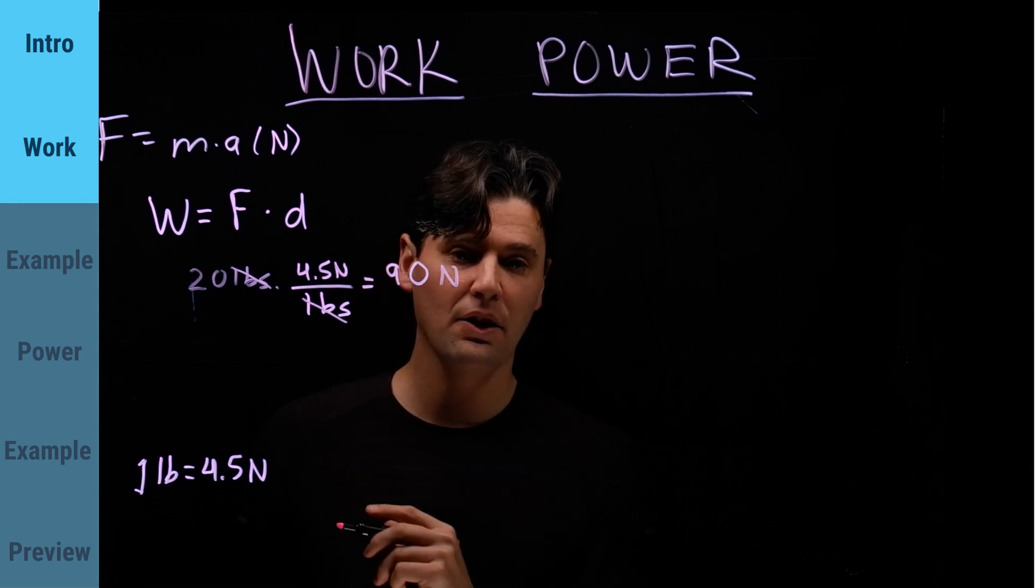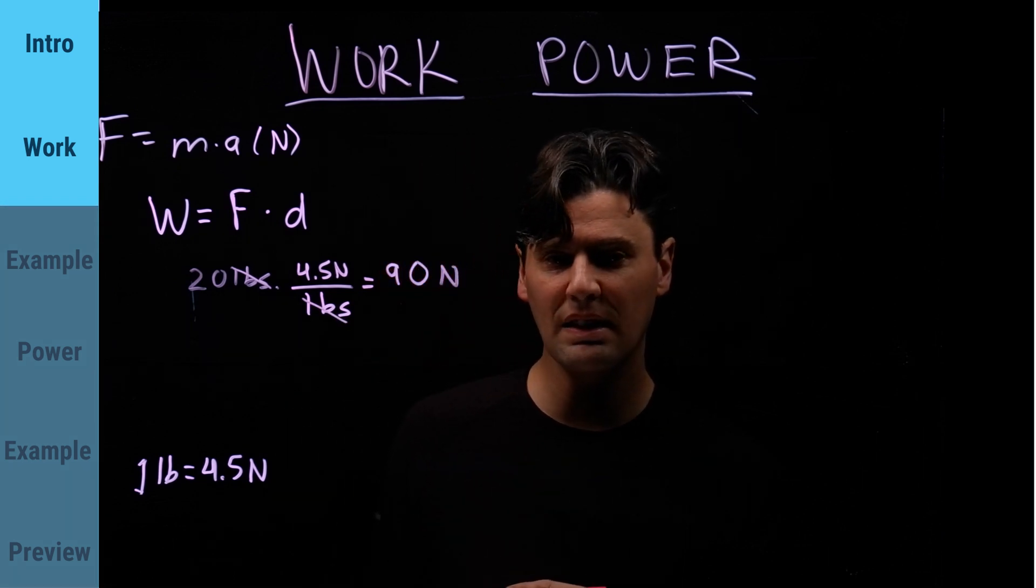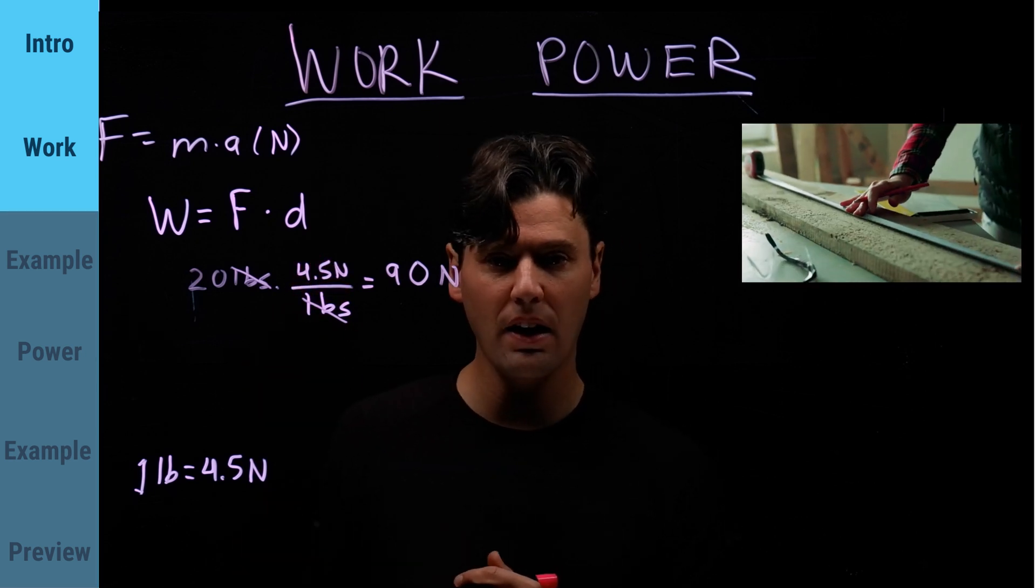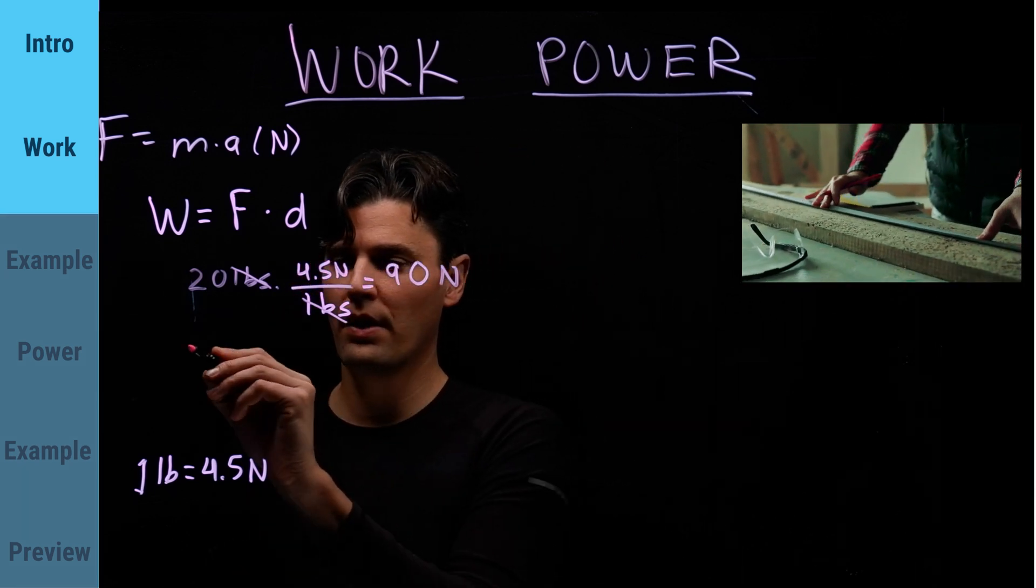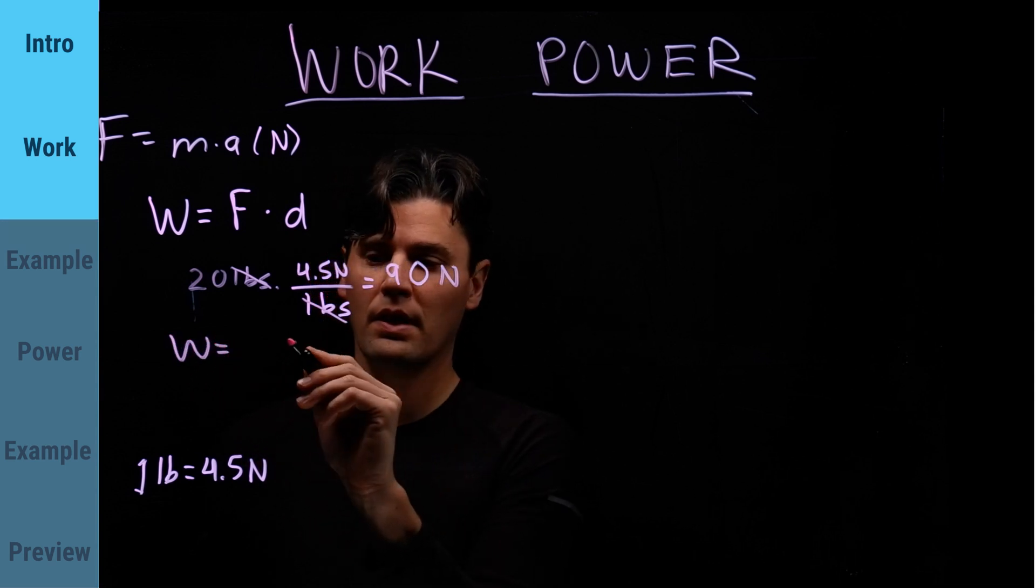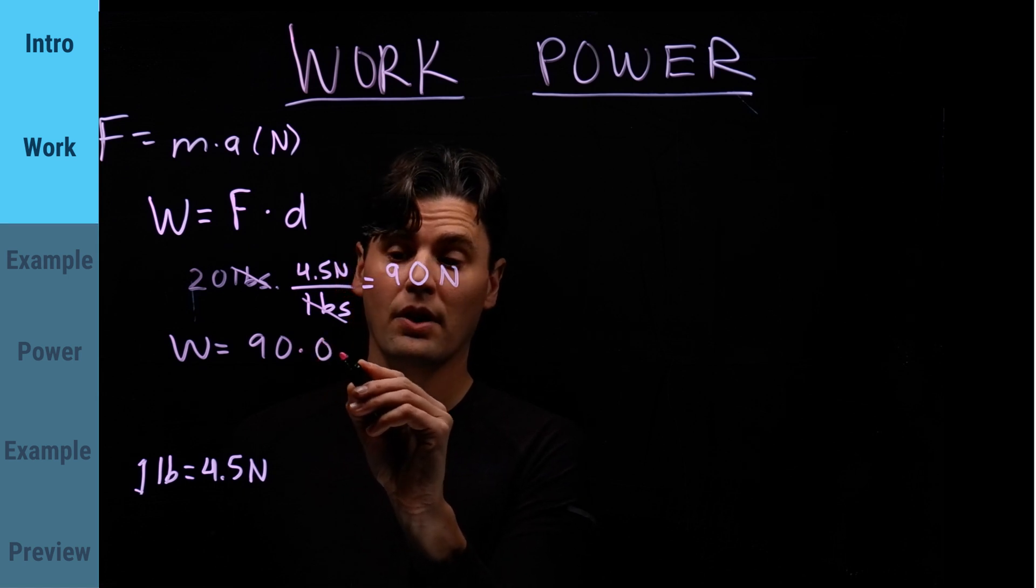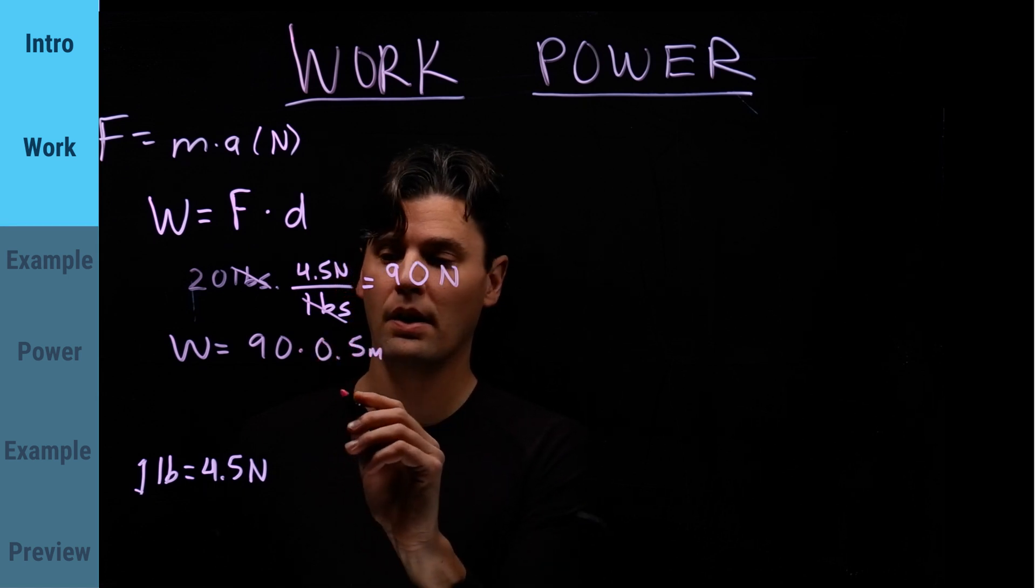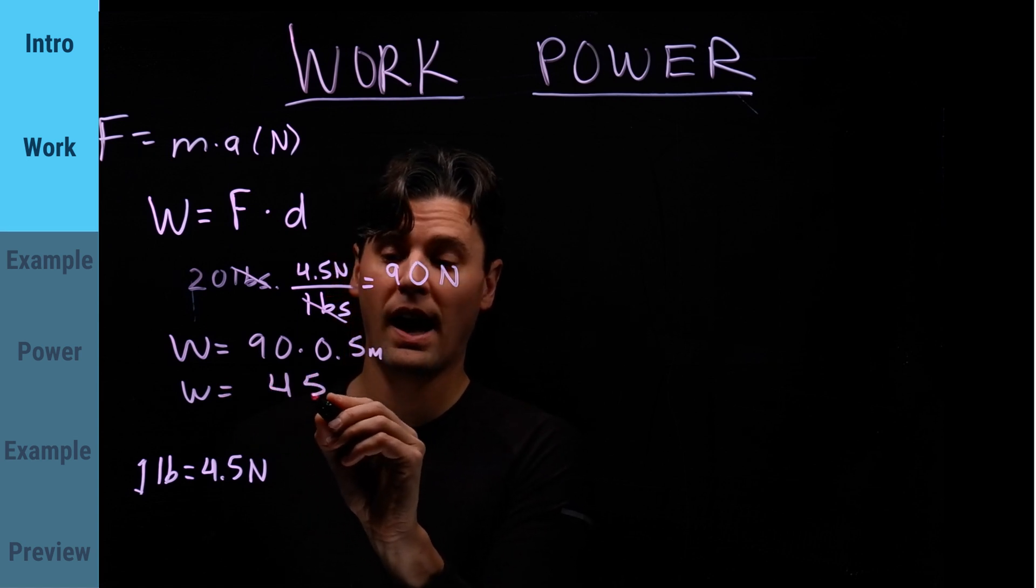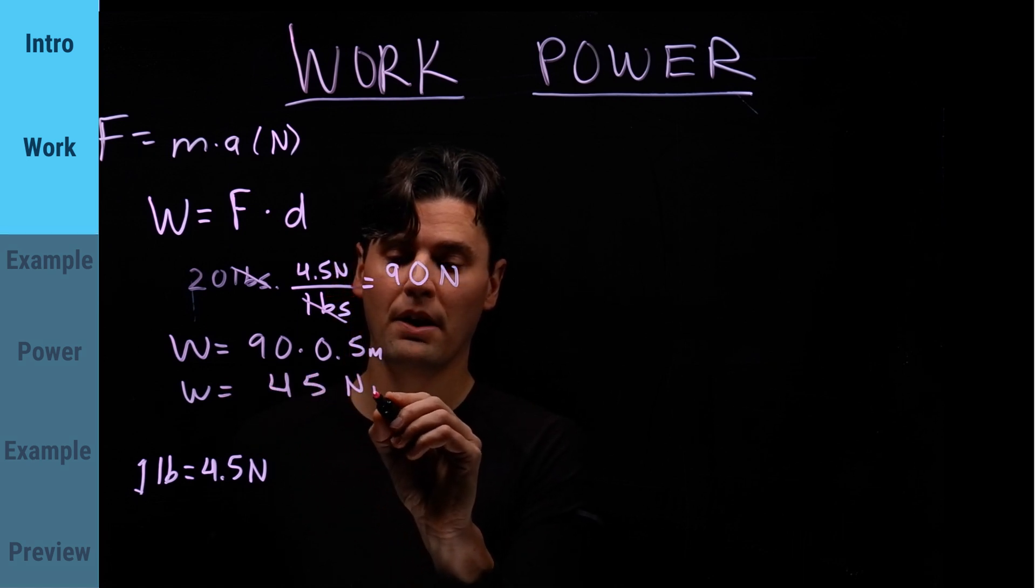Let's say I was lifting it, for simplicity, just half a meter straight up in the air. Then the work is 90 newtons times 0.5 meters. So the work is 45 newton meters.